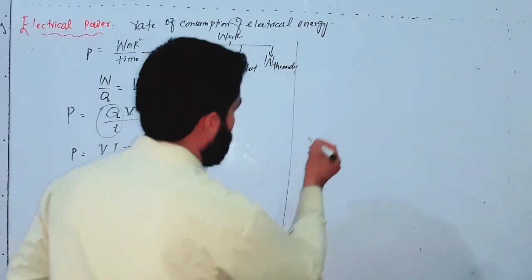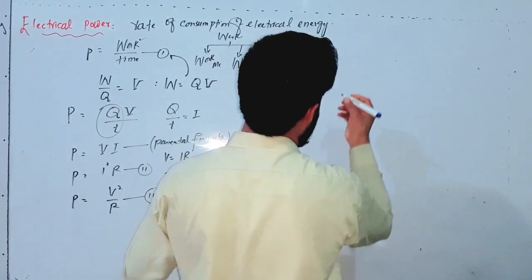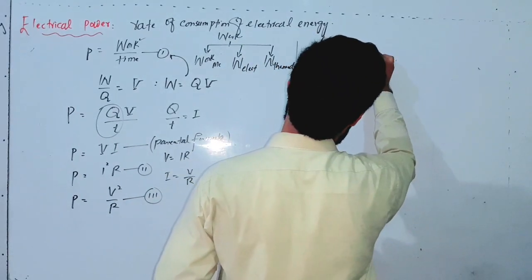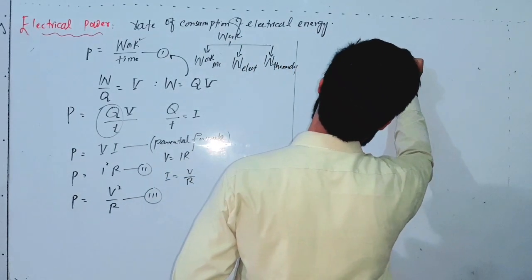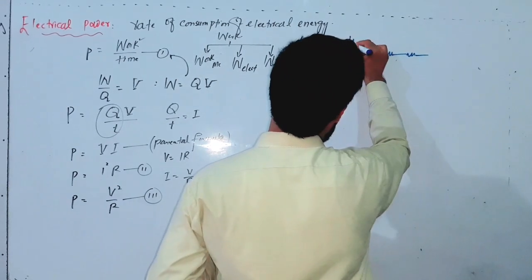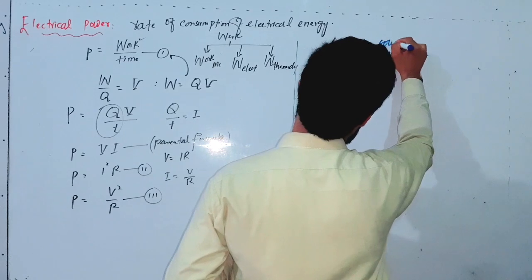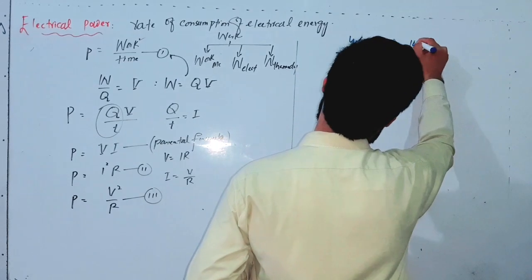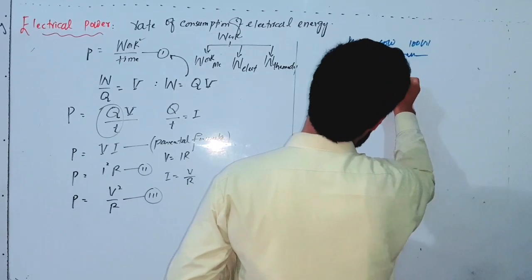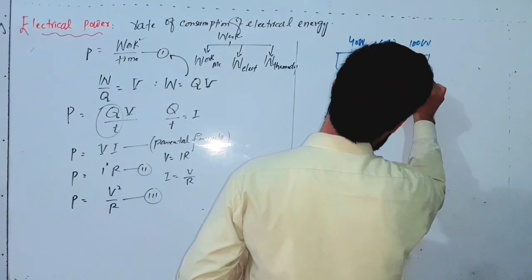For example, we have resistors — or bulbs — of 40 watt, 60 watt, and 100 watt connected in a series combination, and they are all connected to a single potential difference source of 220 volts.